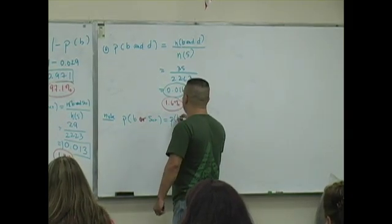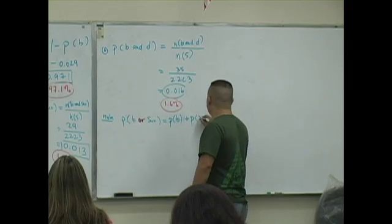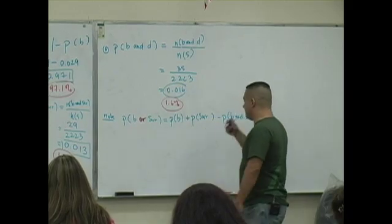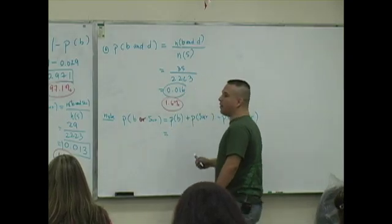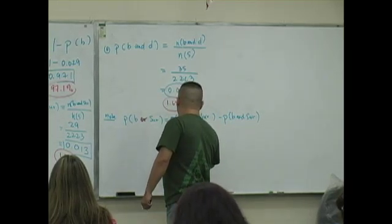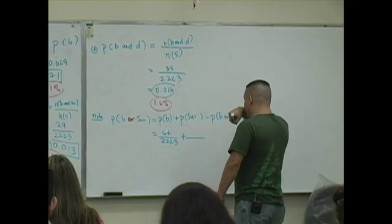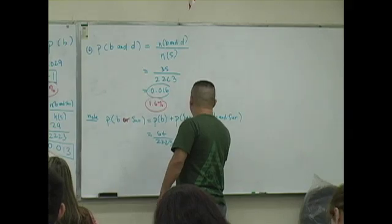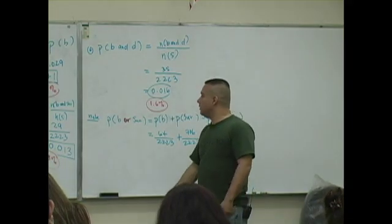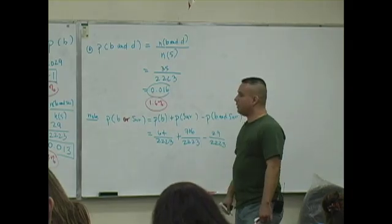What is the addition rule? It's a probability passenger is a boy plus the probability of what? Survivor. Survivor. Good. Minus the probability you're a boy and you what? Survived. You guys okay with this? So what do you get with this? What's the probability that you're a boy? What is it? I think we determined that. Isn't that 64 over 2,223? Is that true? Plus, what's the probability that you're a survivor? Oh, we determined that too. 706 divided by 2,223. Minus, what's the probability you're a boy and you survived? Didn't we do that too? Yeah, what is that? 29 over what? 2,223. Is that true?